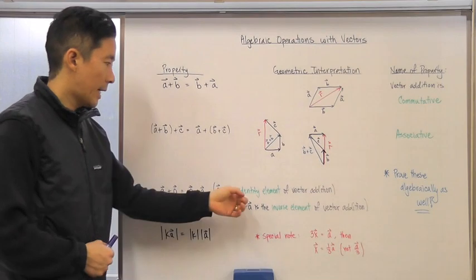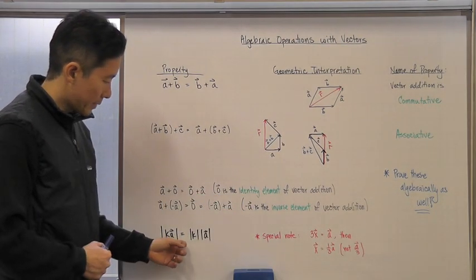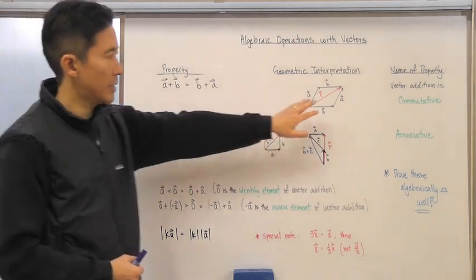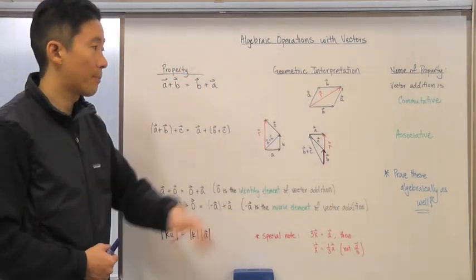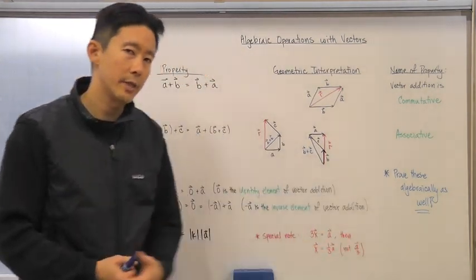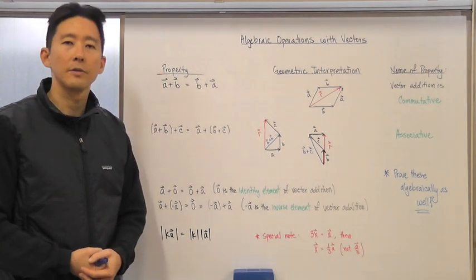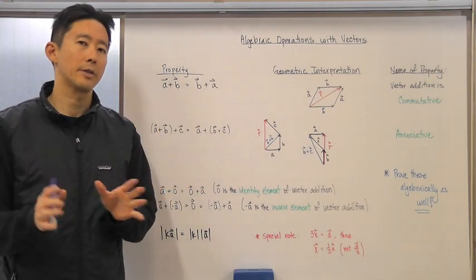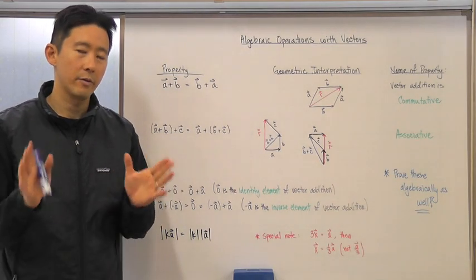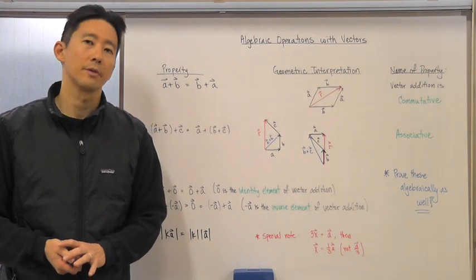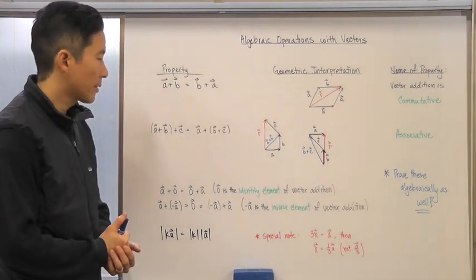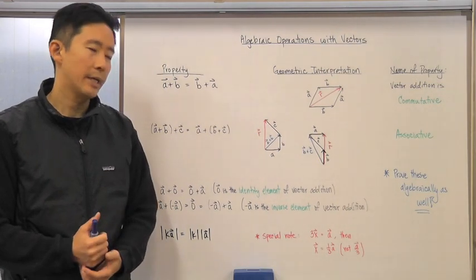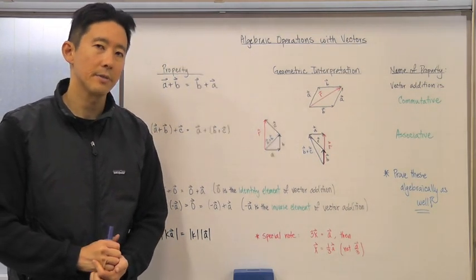So those are the properties: the commutative property, the associative property, the identity and inverse elements for vector addition, and the property regarding magnitudes of vectors. We covered the geometric interpretations of the commutative and associative properties. I also ask that you prove those algebraically — remember, you need both a geometric and algebraic understanding of vectors. We'll review that in class next time. See you next time, bye bye.